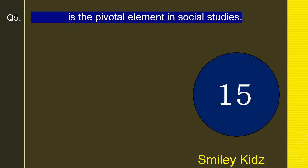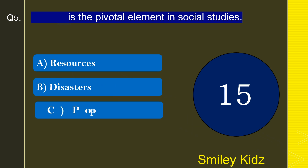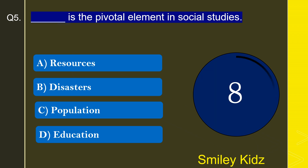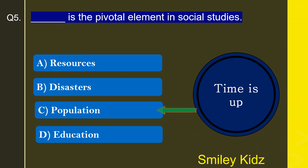Moving to question number 5: What is the pivotal element in social studies? Options are resources, disasters, population, or education. The correct answer is population. Population is the pivotal element in social studies.